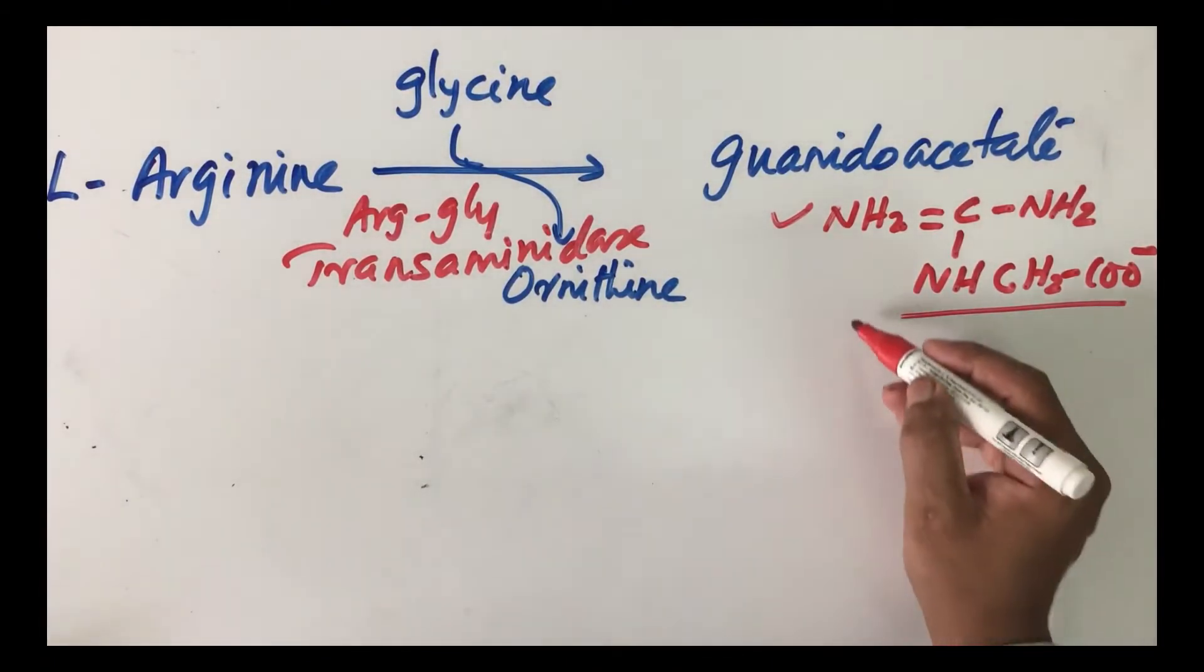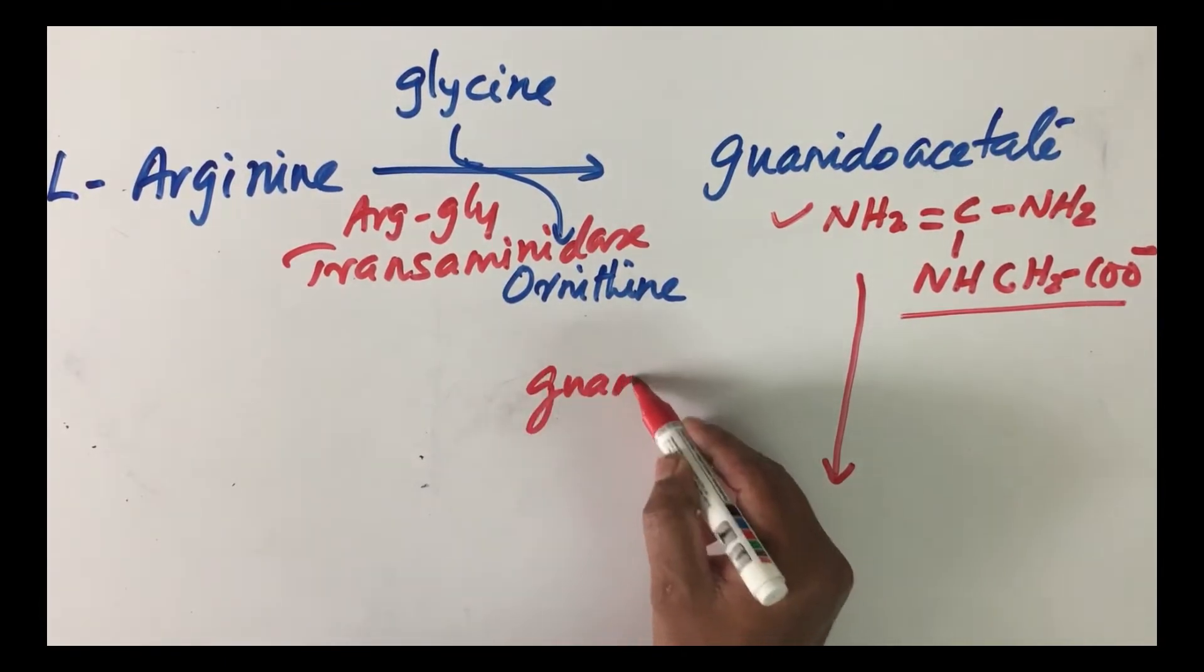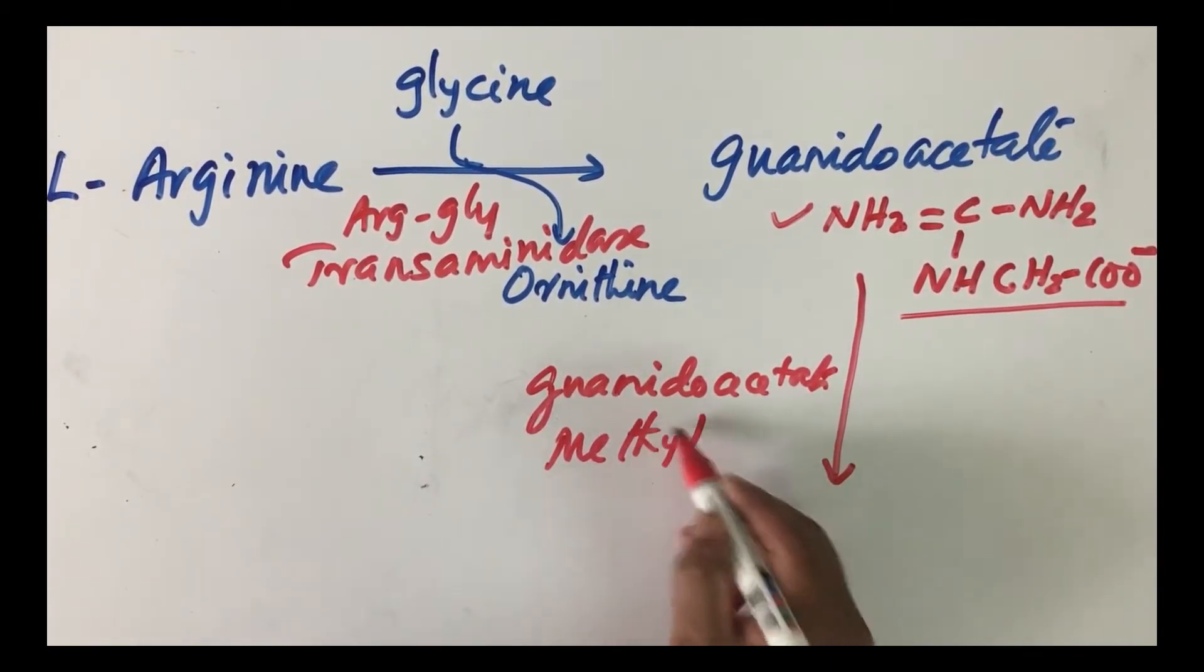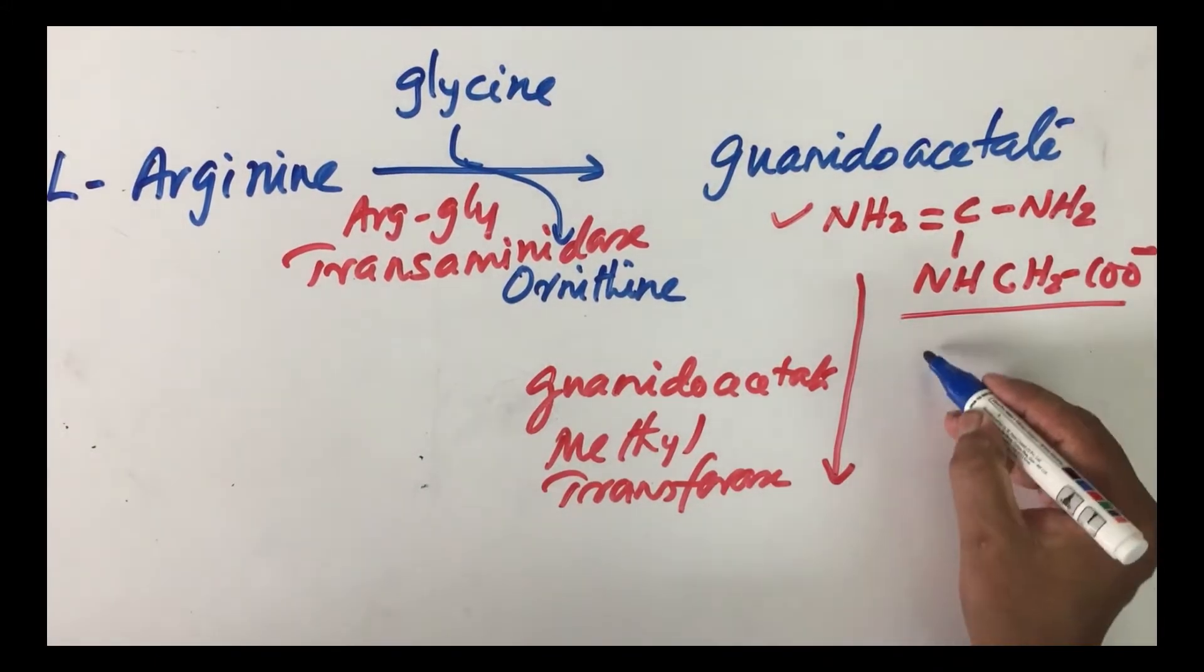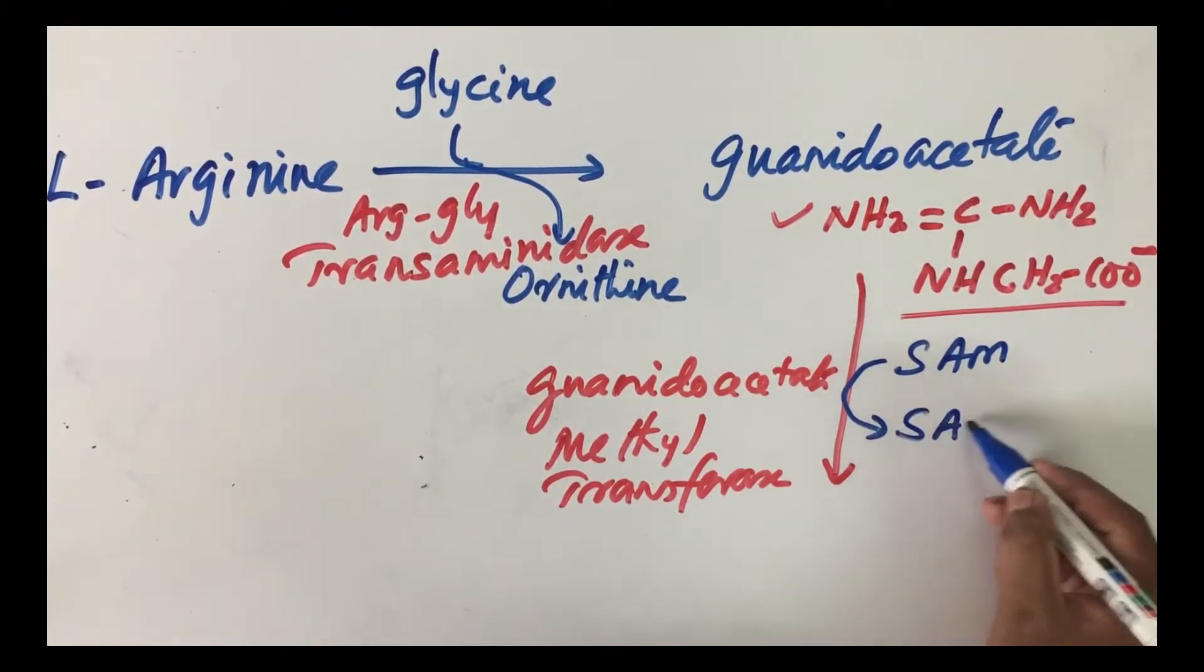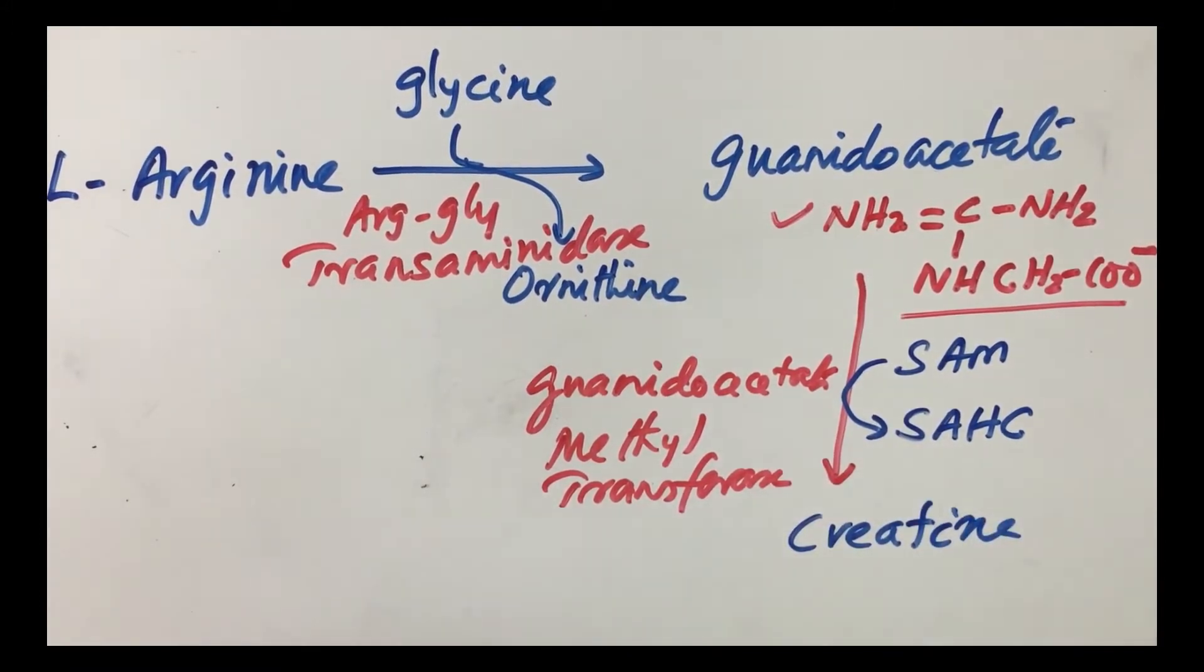Once guanidoacetate is formed, the next step is catalyzed by an enzyme known as guanidoacetate methyl transferase. Therefore, a methyl group is added and you know that the methyl donor is S-adenosylmethionine. Once the methyl group is transferred, it becomes S-adenosylhomocysteine. The product that you are getting is creatine.